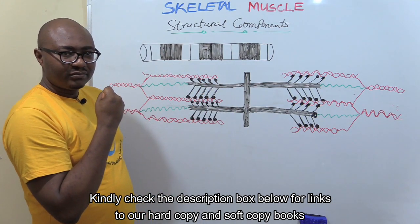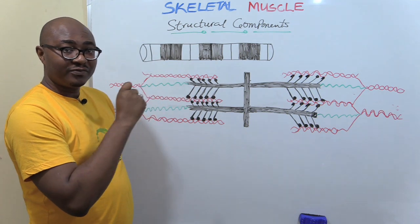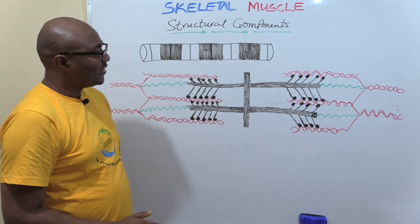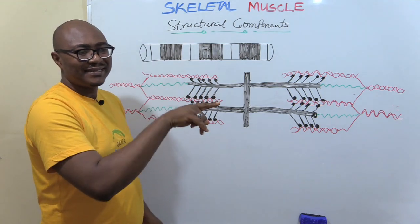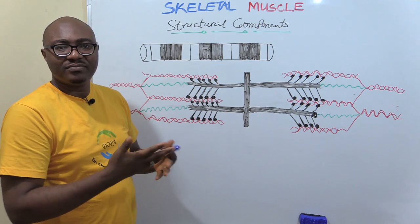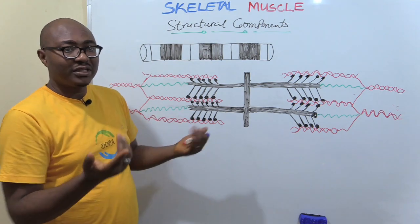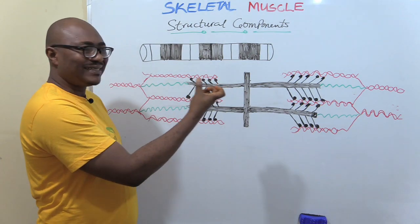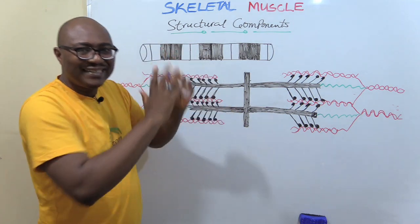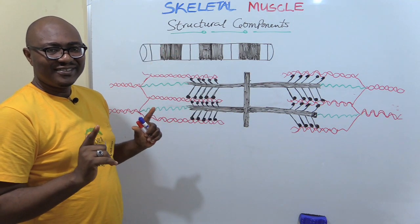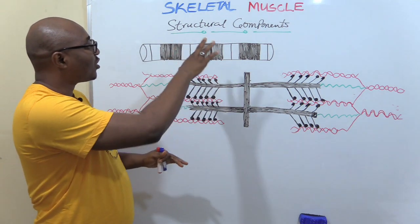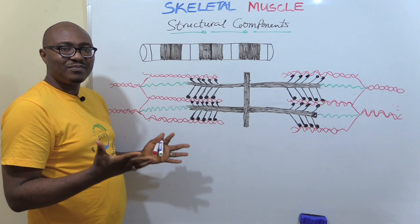But first, one of the principles of physiology is that structure determines function. So for you to understand the mechanism — another way to ask that question is, explain the mechanism of skeletal muscle contraction — you must first understand the structure. So that's what we're going to be dissecting today: the structural components of a skeletal muscle.